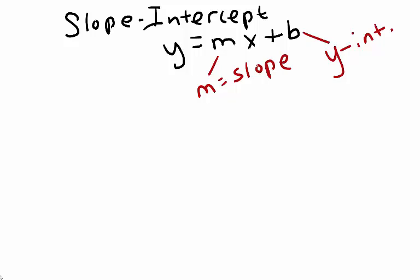Suppose I have the following linear equation, 5x minus 4y equals negative 20, and I'm asked to rewrite this equation so that it is in slope-intercept form. In other words, I need to solve the equation for y.